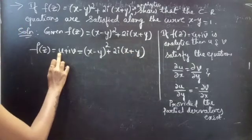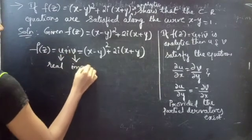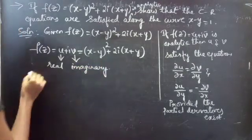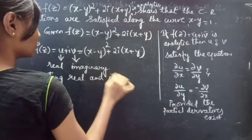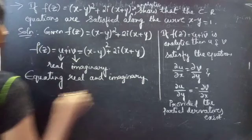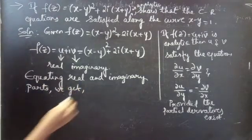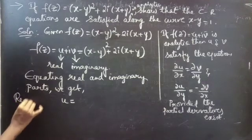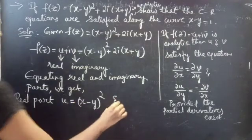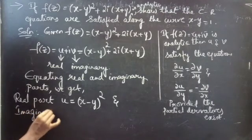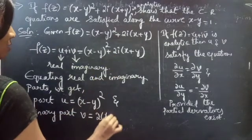Now, comparing the real parts and imaginary parts. Equating real and imaginary parts, we get: u = (x - y)², and v = 2(x + y). You should not write i in the imaginary part expression for v.